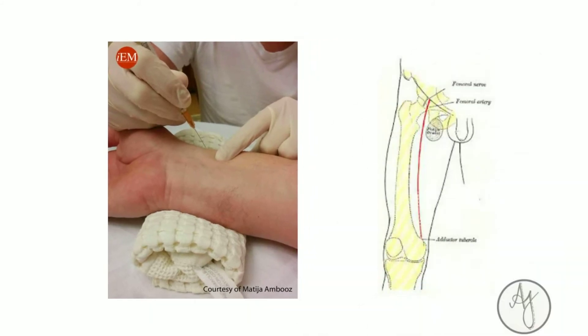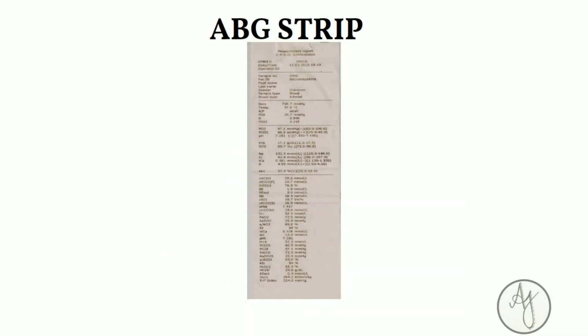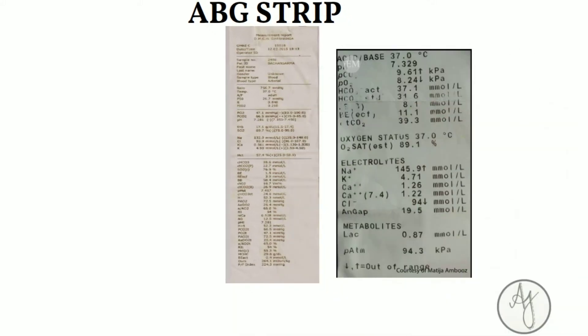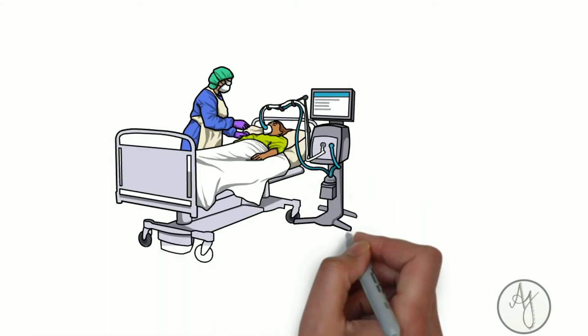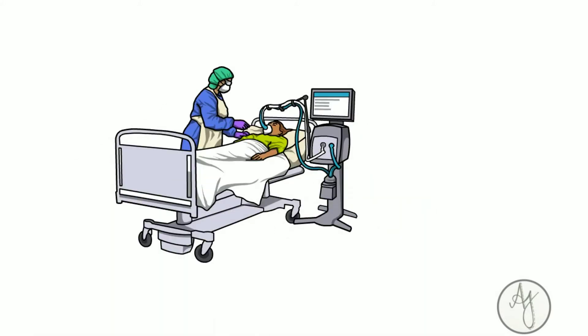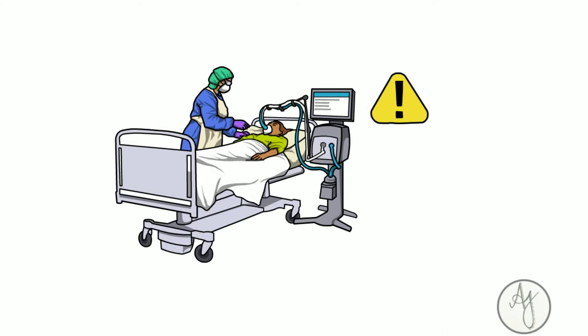This is what an ABG strip looks like — I'm sure all of you have seen this at some point in your life. It has a lot of small details written on it. Some cases that present to the ER are so critical that we definitely need to train ourselves to analyze and treat as soon as possible.